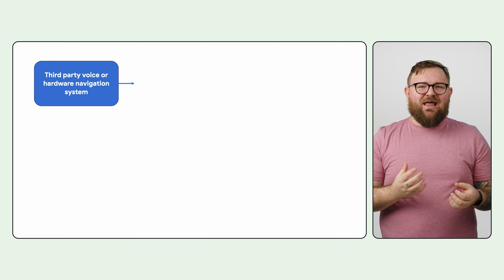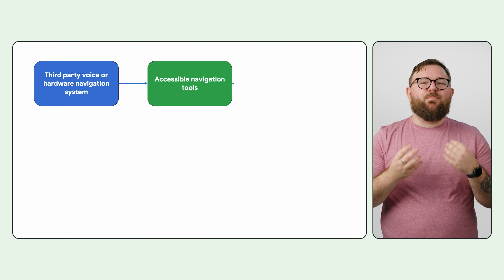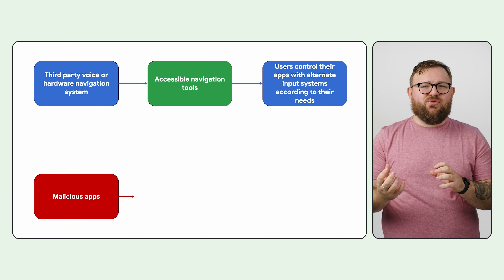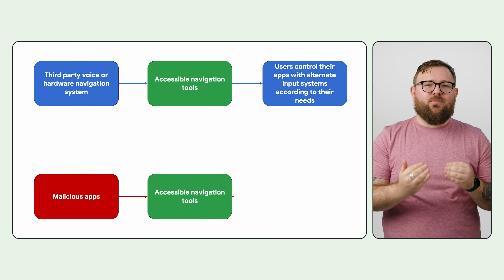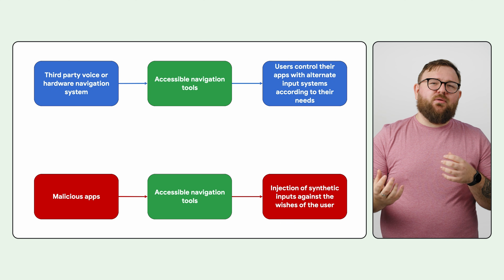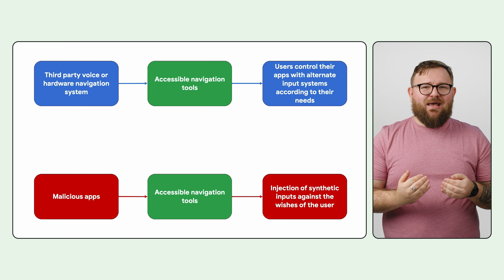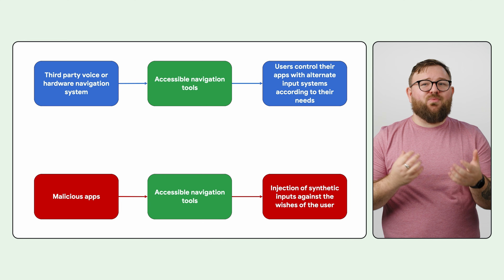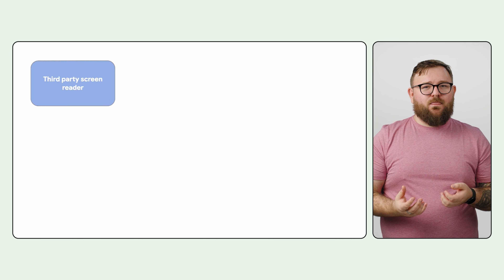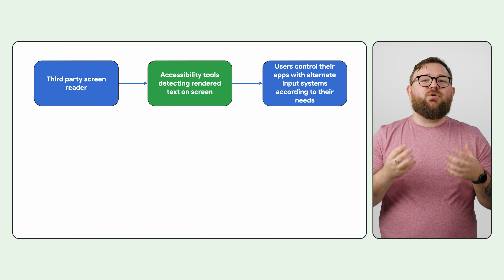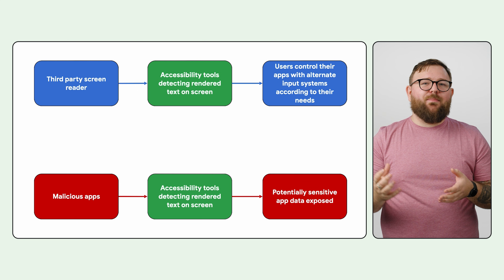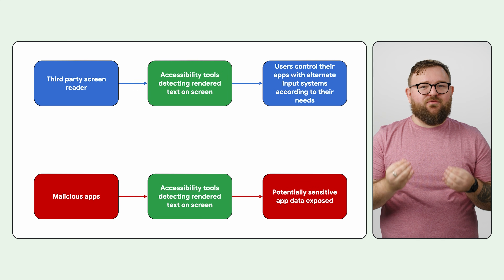The depth of functionality provided by the API makes it a prime target for malicious apps that use social engineering to trick users into giving access to powerful platform features to conduct nefarious operations. For example, malicious apps abuse the Accessibility API to read sensitive information directly off the screen, a critical function of screen reading apps. Some accessibility features that let you use voice commands or external gear to tap and swipe could be exploited by such apps to secretly take control of your device.